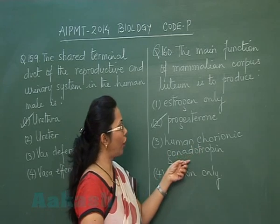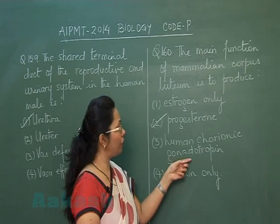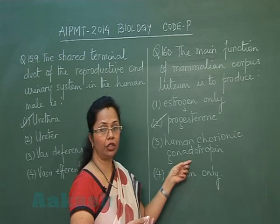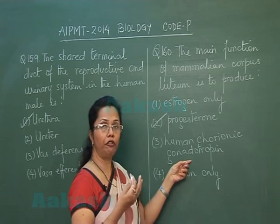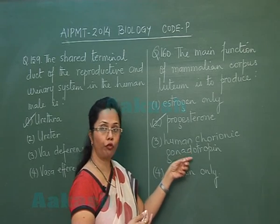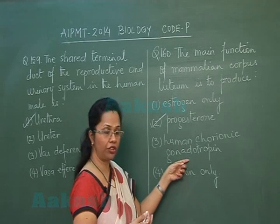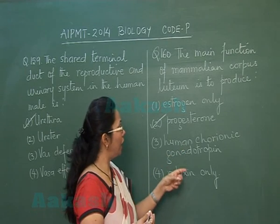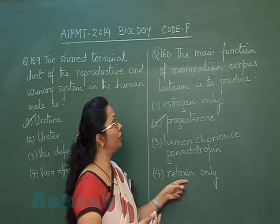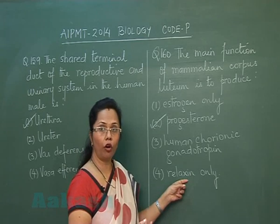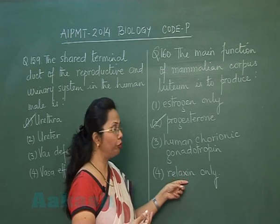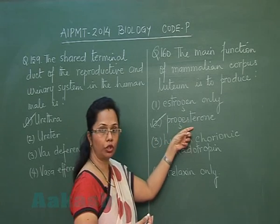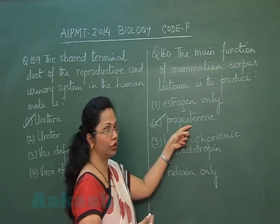Human chorionic gonadotrophin (hCG) is secreted by the trophoblast after fertilization, not by the corpus luteum. Relaxin is also secreted by the corpus luteum but is not its primary hormone, and it is secreted toward the end of pregnancy. Therefore, the best choice is progesterone as the main product of the corpus luteum.